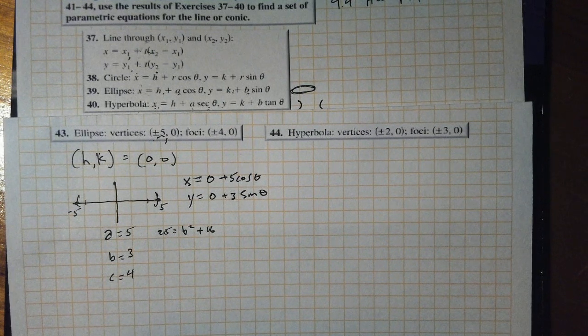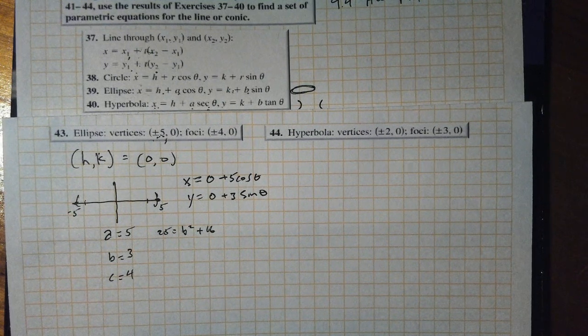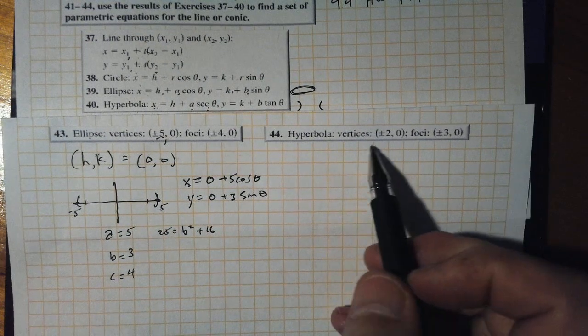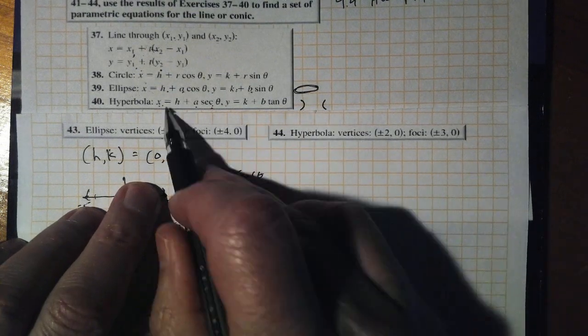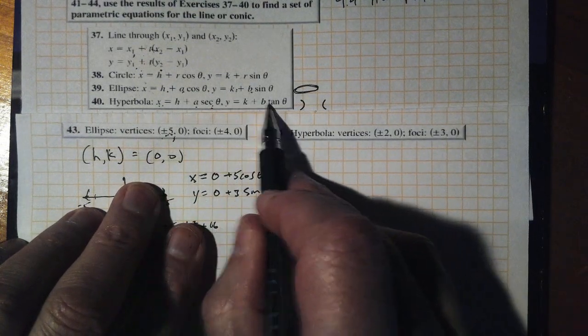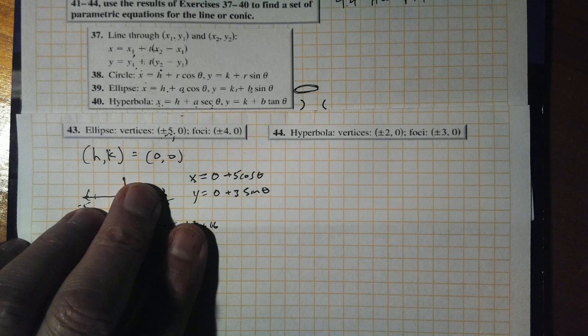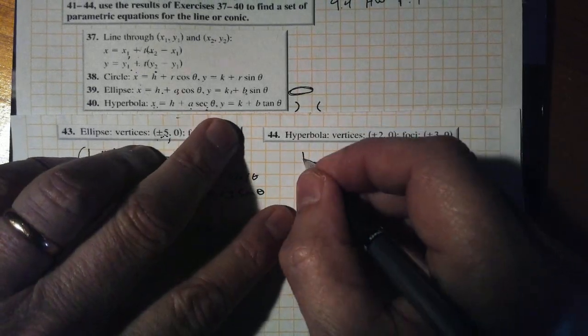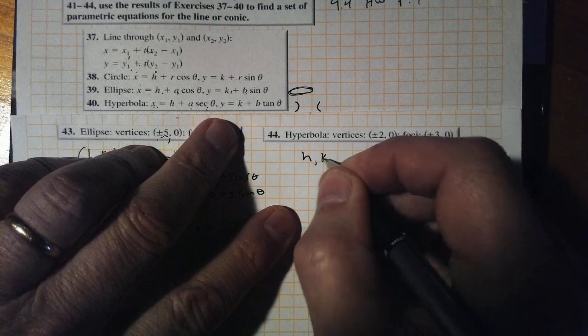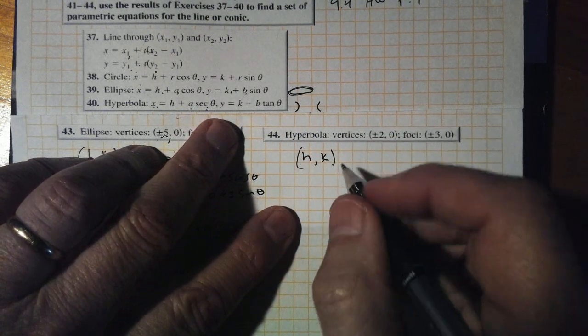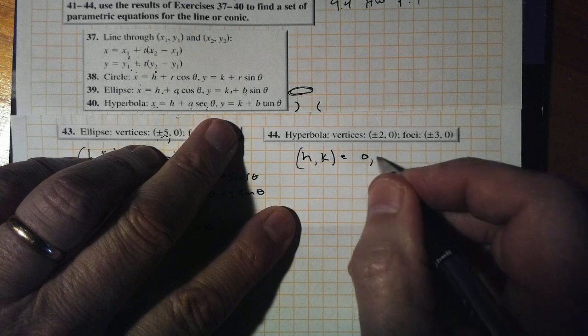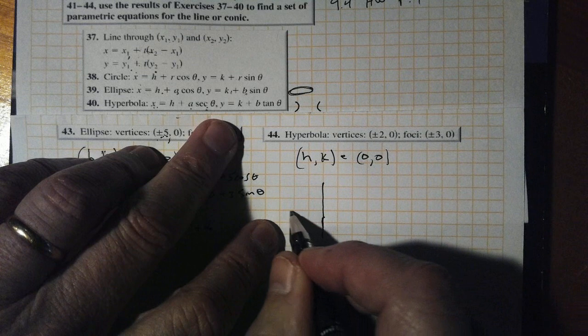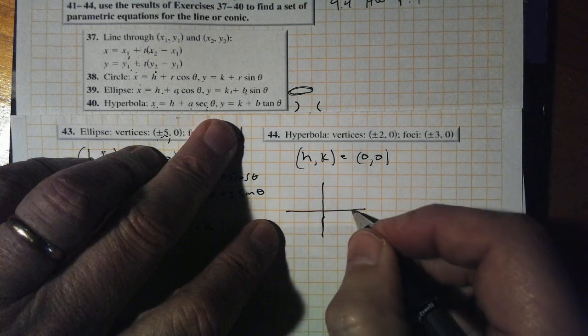And now you should be in really good shape to do 44. Notice right and left hyperbola, the vertices are to the right and to the left. It does look like this, so this applies. We don't have to switch the a's and the b's and rethink tangents and secants. Give that one a try. We've got h,k is (0,0).